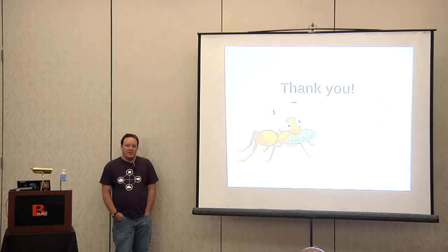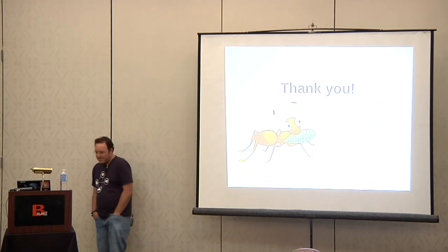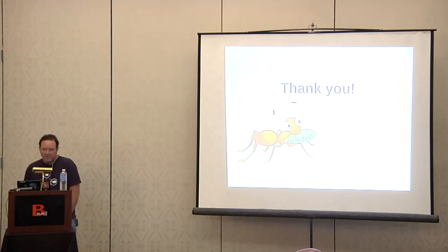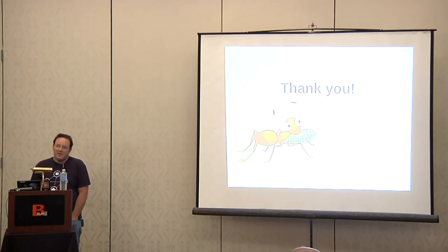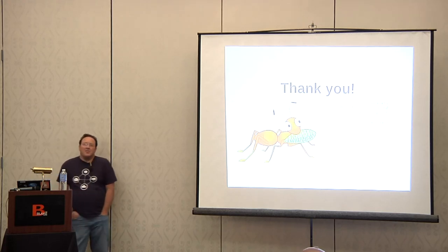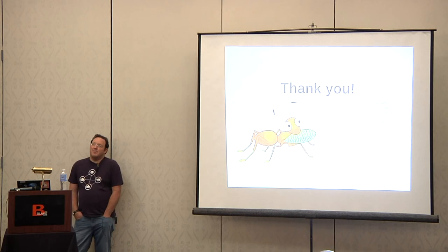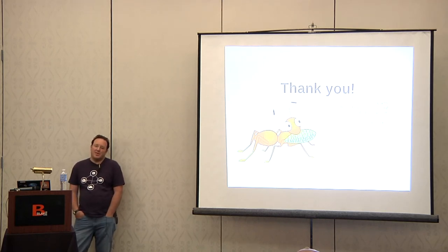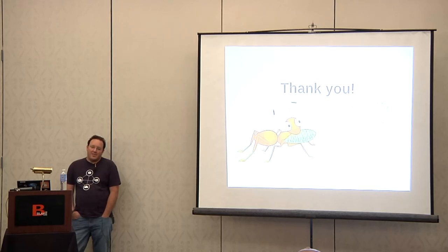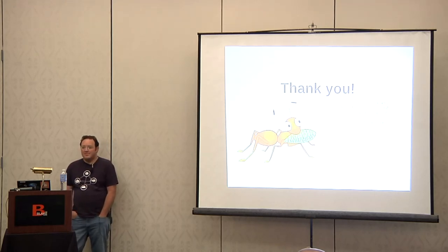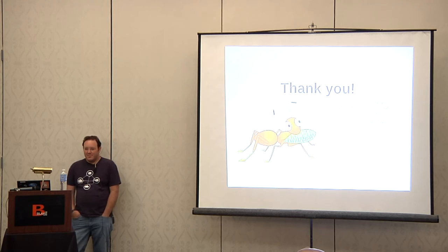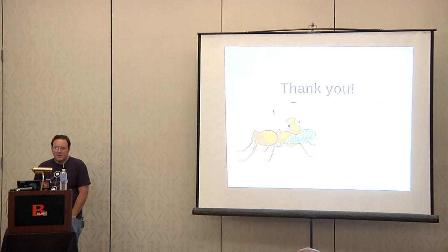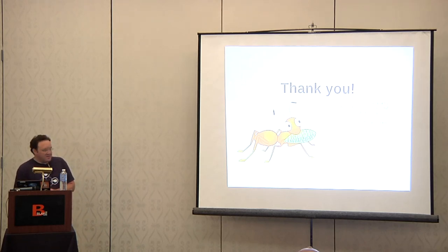Gluster will handle sparse files, but it's not going to do it any faster because it's looking at the block level rather than considering that a bunch of zeros can be compressed. It will handle them as if it's not a sparse file. If no one else has questions, I appreciate your attention. I apologize that I'm not John Mark for you — feel free to complain to him at johnmark at redhat.com.